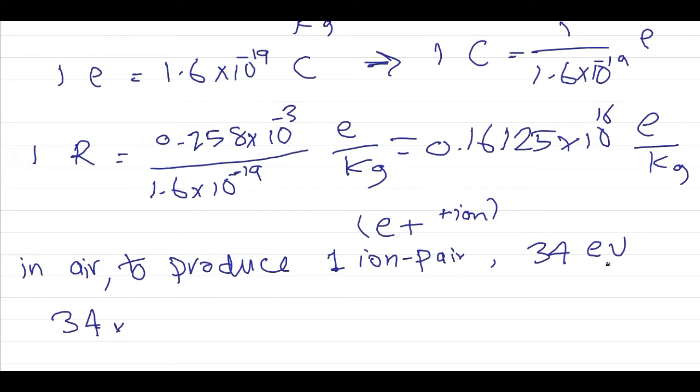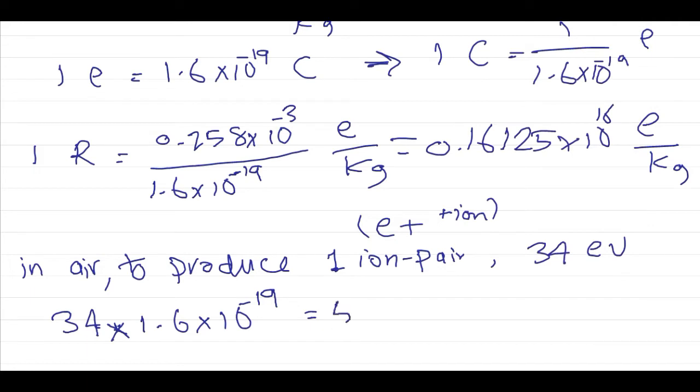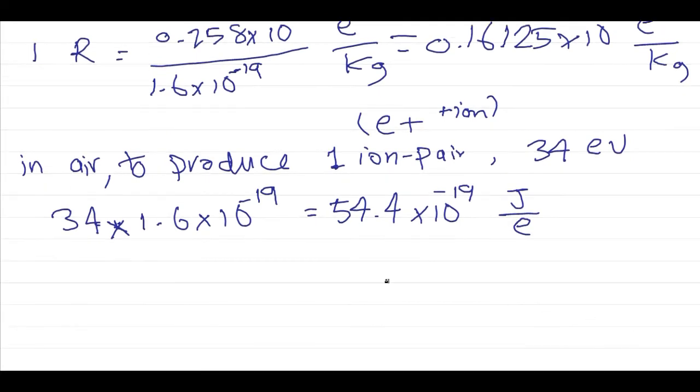We know that one electron volt equals 1.6 times 10 to the minus 19 joules. So 34 multiplied by 1.6 equals 54.4 times 10 to the minus 19 joules per electron. Now we have in one Röntgen.